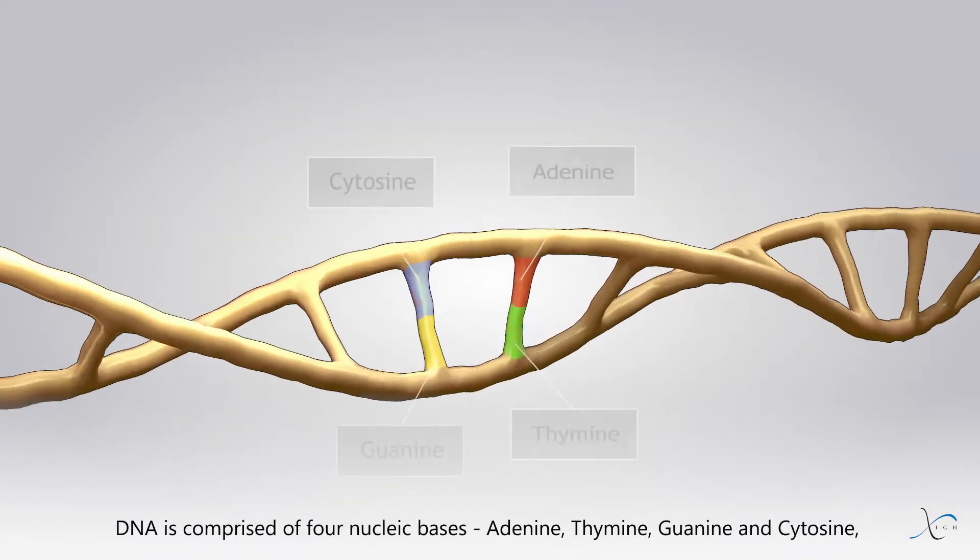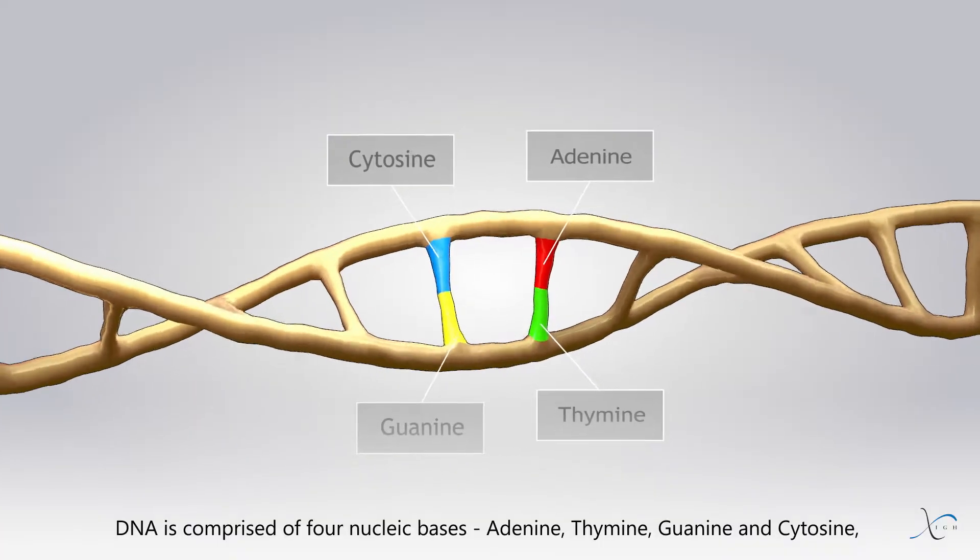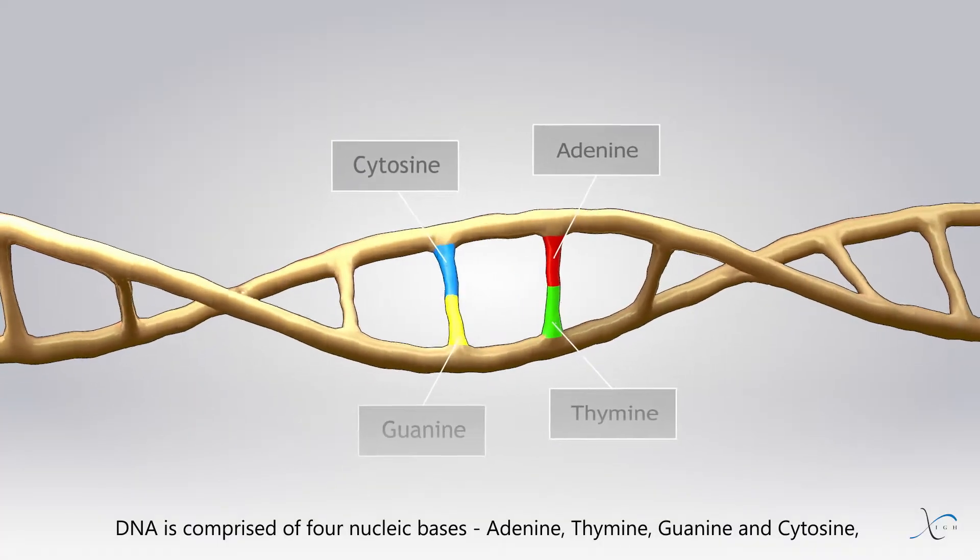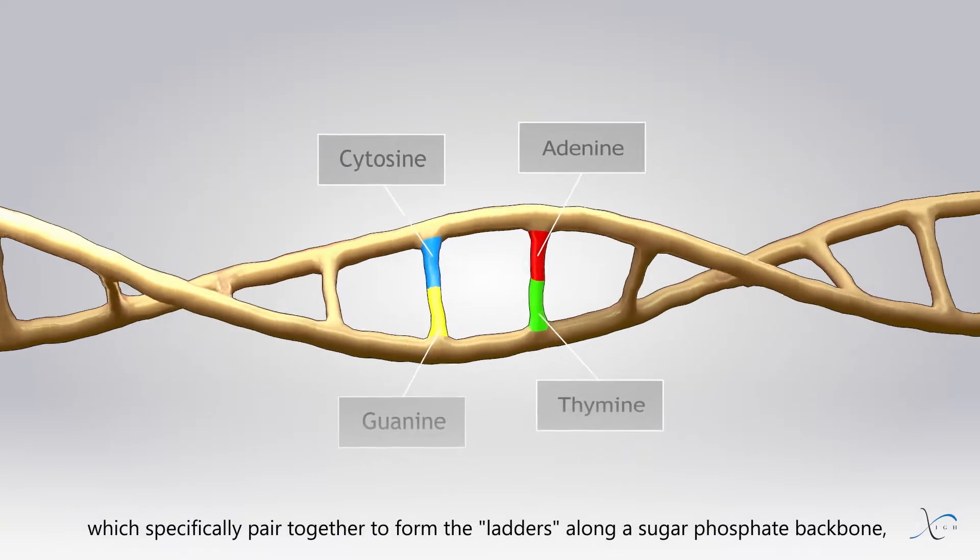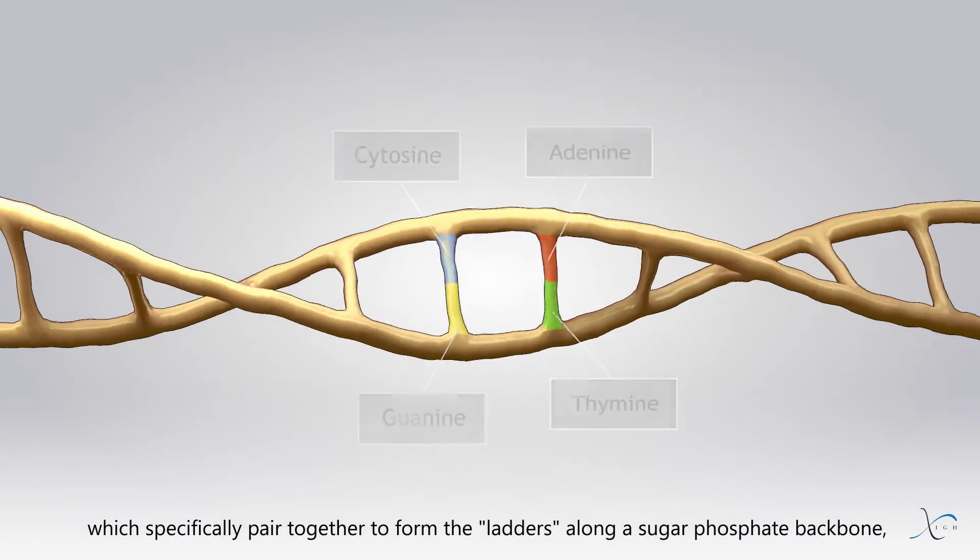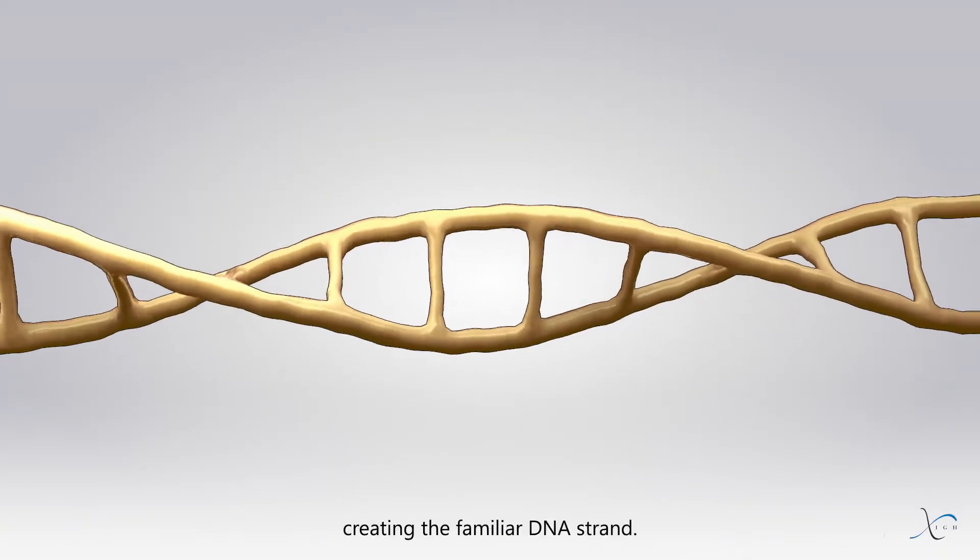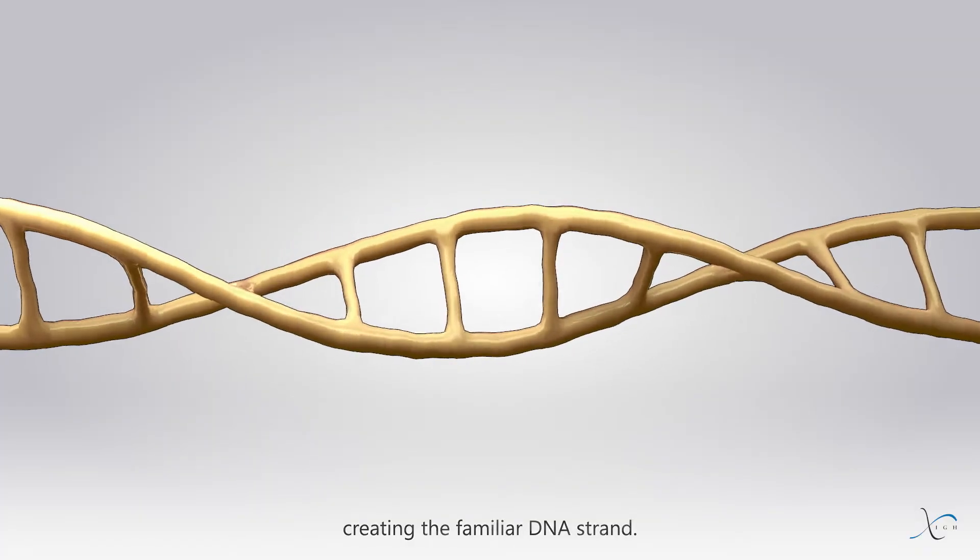DNA is comprised of four nucleic bases: adenine, thymine, guanine, and cytosine, which specifically pair together to form the ladders along a sugar phosphate backbone, creating the familiar DNA strand.